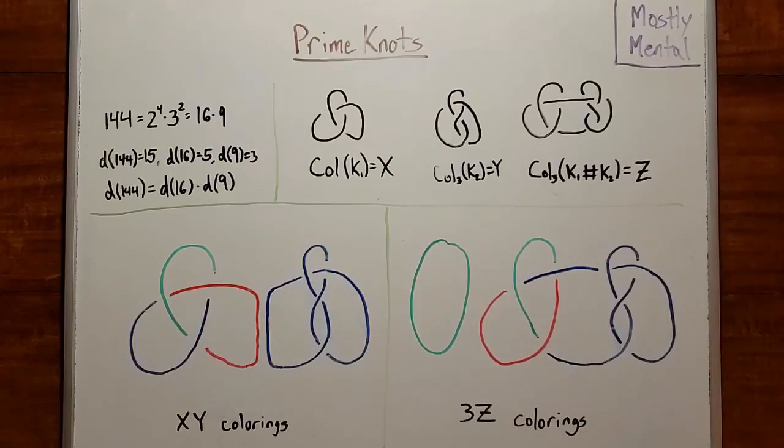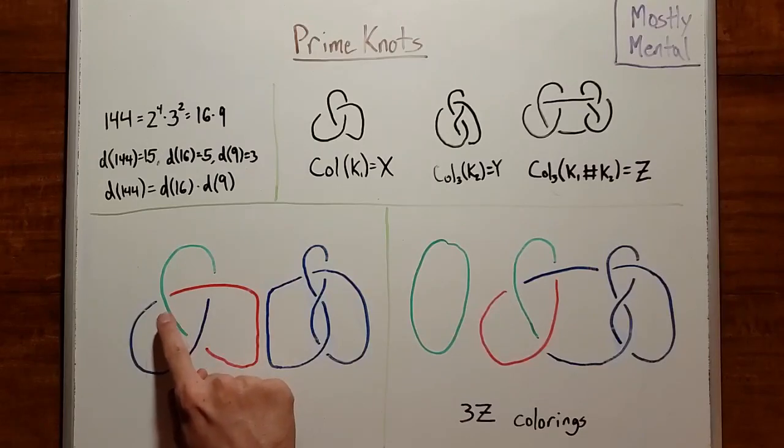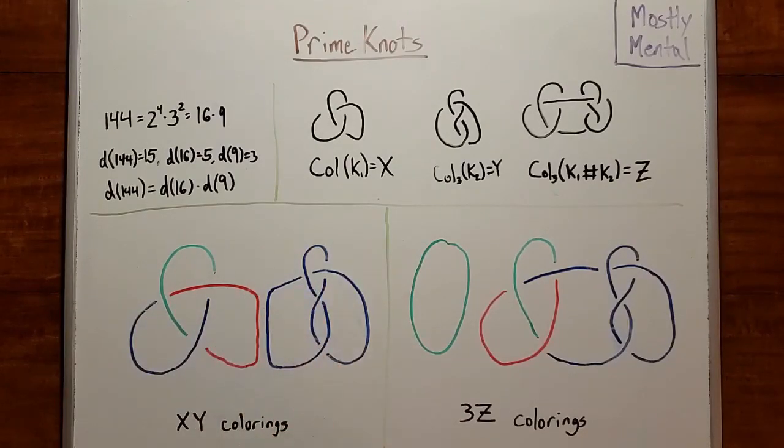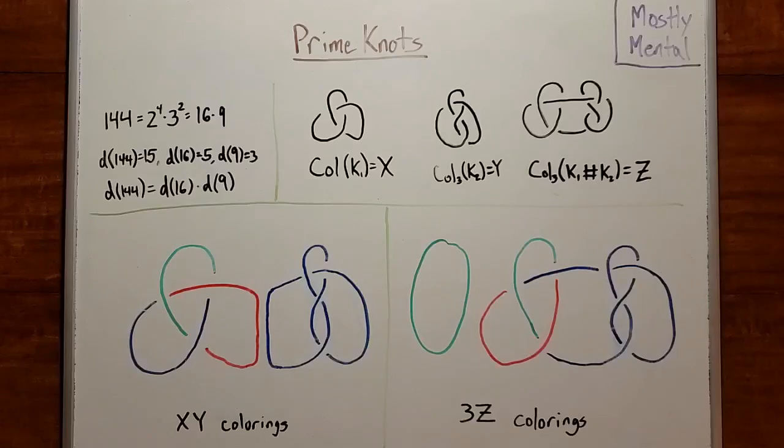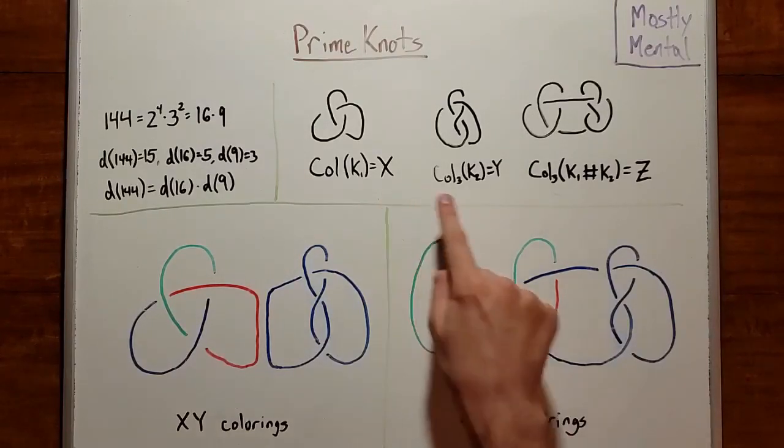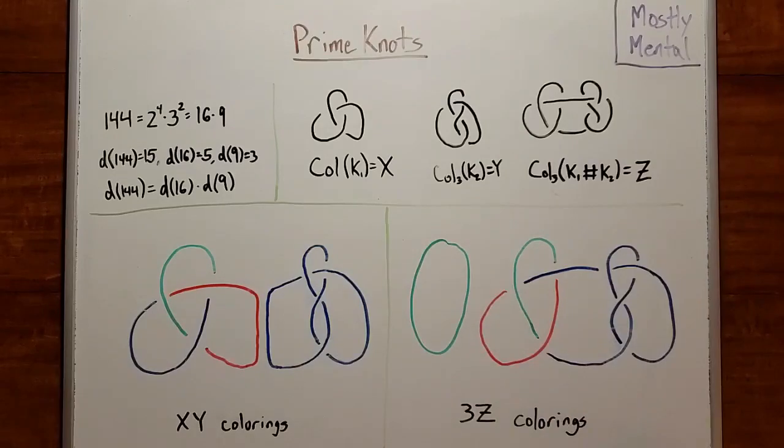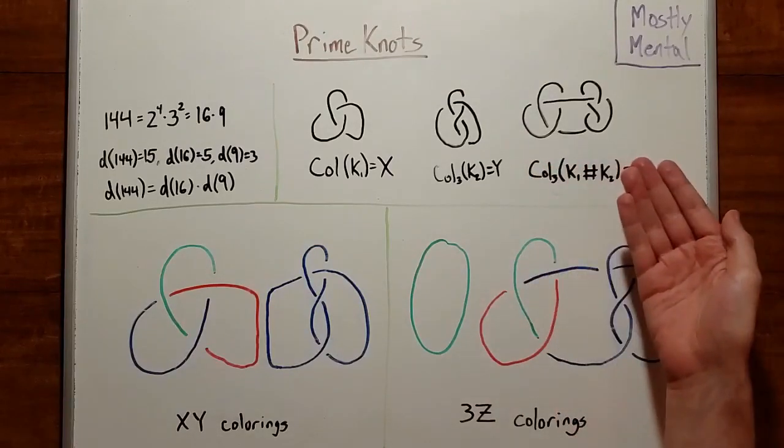For example, let's look at 3 colorings. As a reminder, those are the colorings of a knot with 3 colors, so that every crossing has either all 3 colors around it, or only one. Say we have 2 knots, like so. And we know how many ways there are to color each of them separately, call those x and y. How many ways are there to color their connected sum?